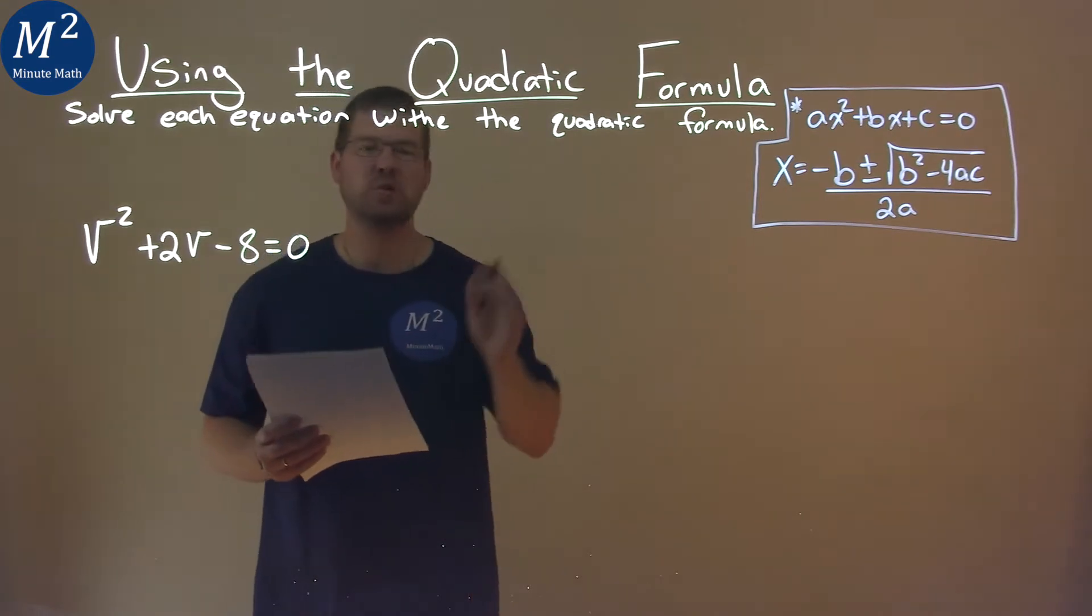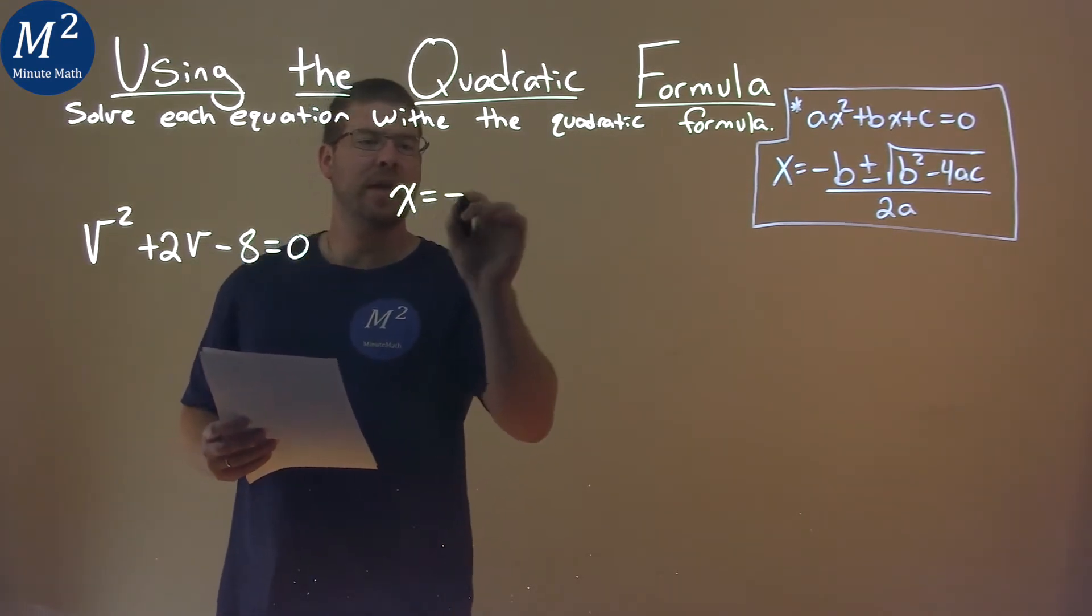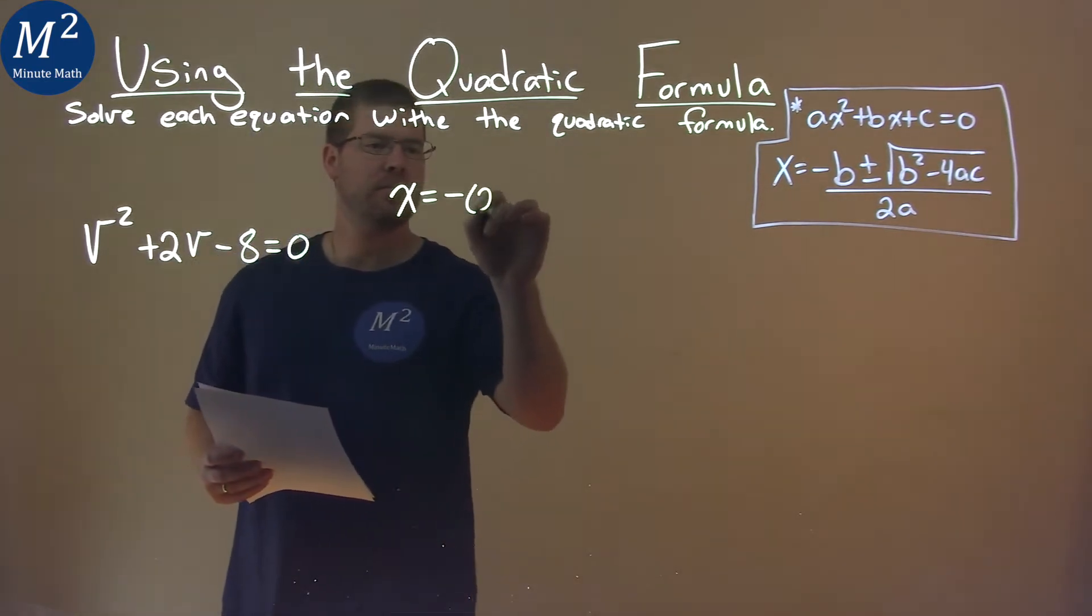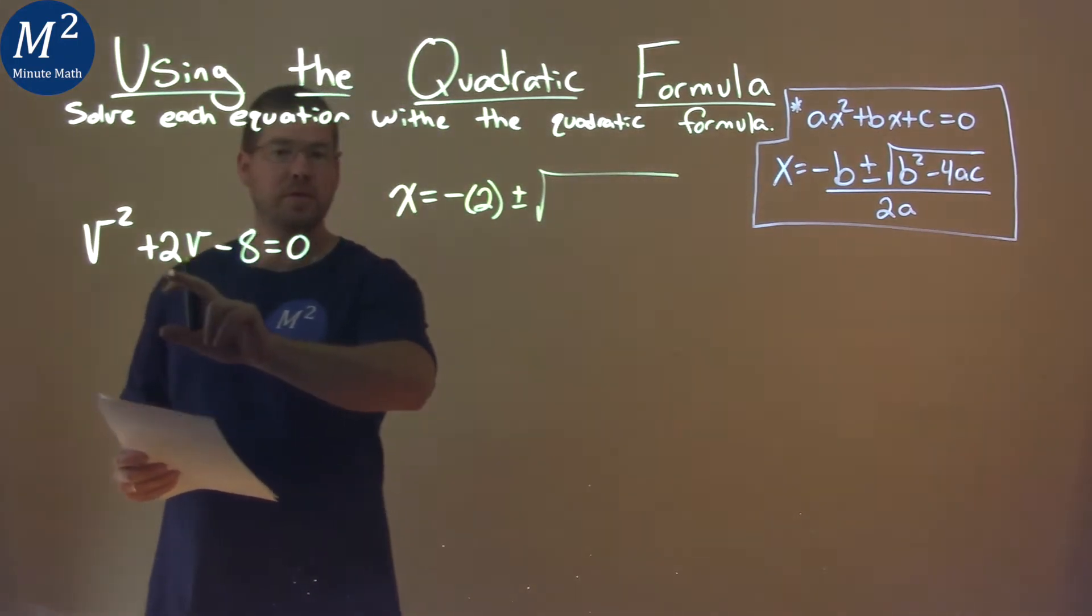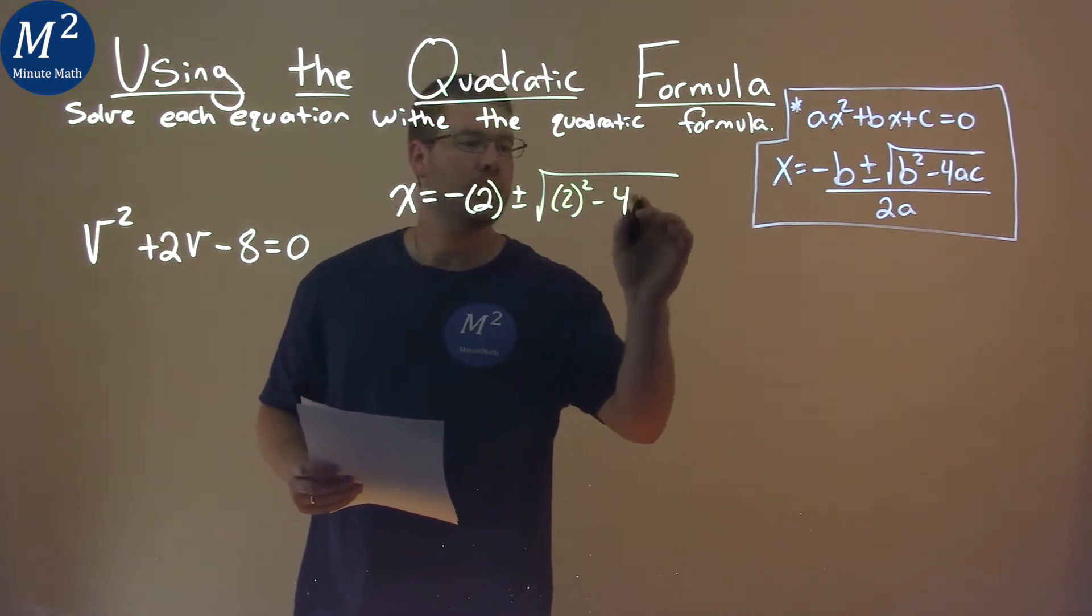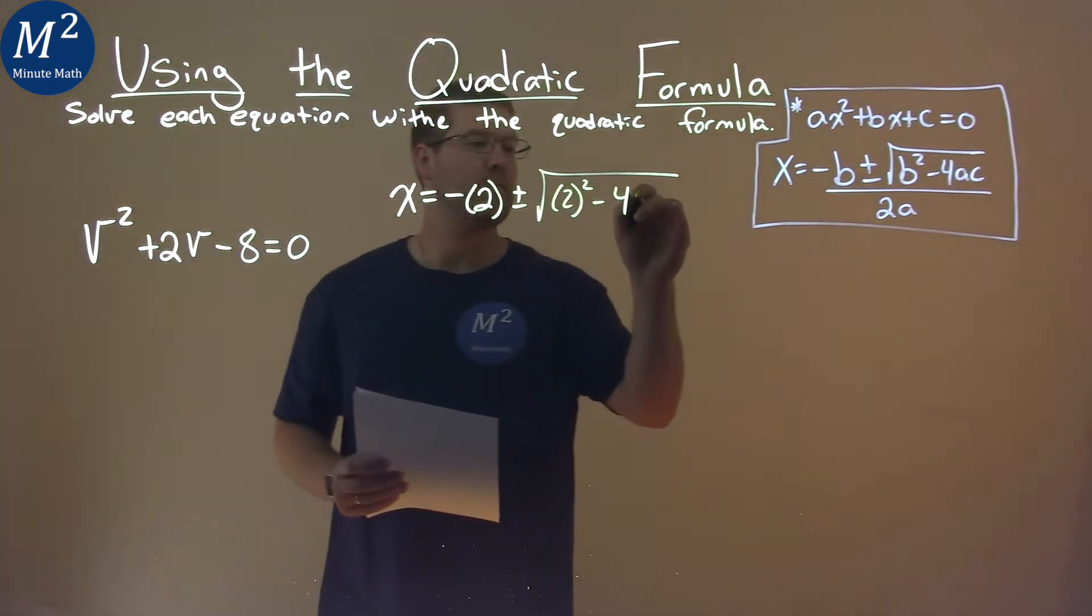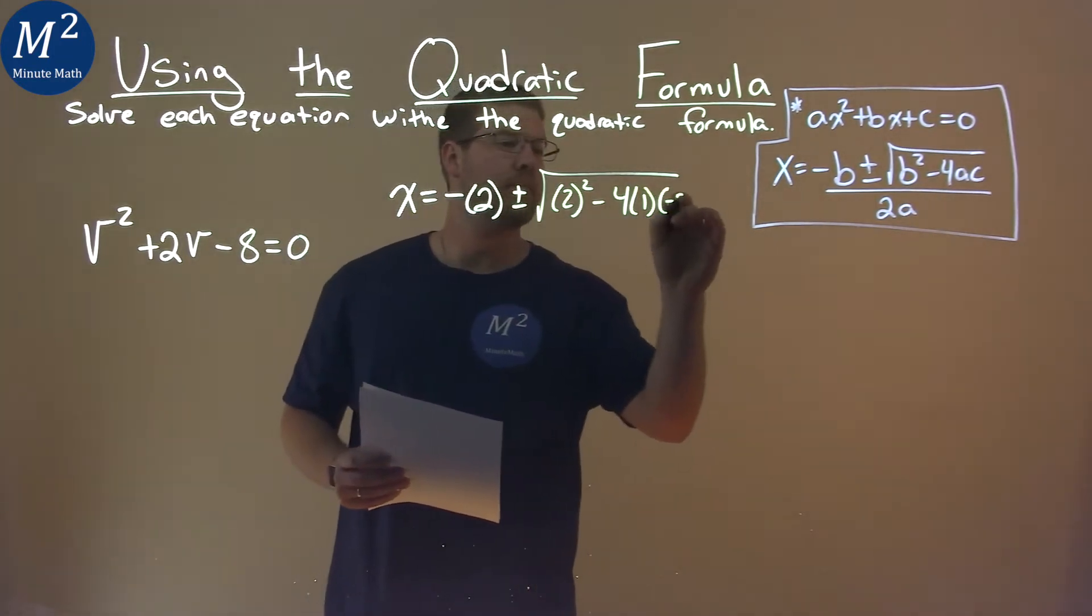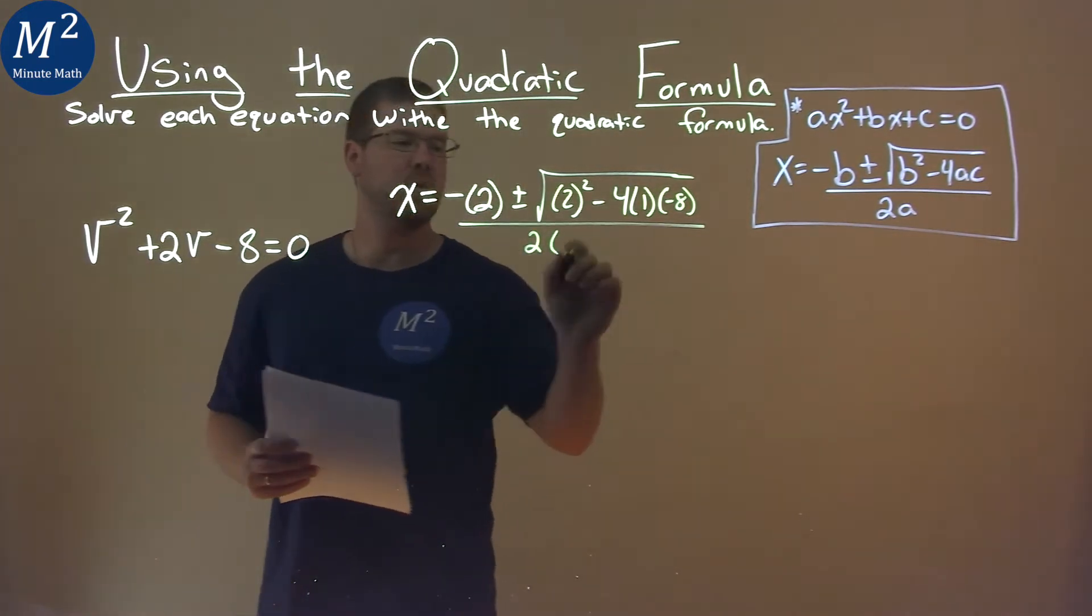So now it's just plugging into our formula. Our formula says that x equals negative b, what's our b value, in this case it's a positive 2, plus or minus the square root of b squared, so that's a 2, minus 4a value, coefficient in front of v squared, which is 1, 4ac, c value is a negative 8, all over 2 times a, which is 1.